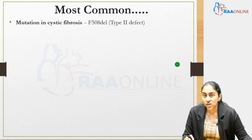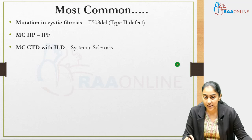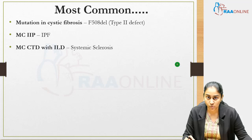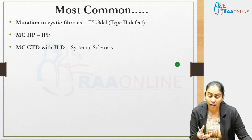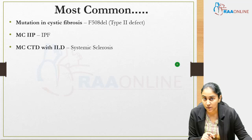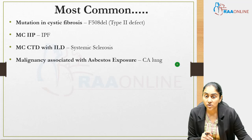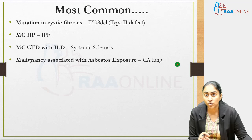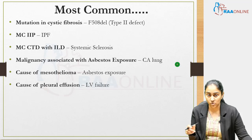The most common mutation in cystic fibrosis is the F508-del type 2 defect. The most common idiopathic interstitial pneumonia is IPF, more common in males, with clubbing, lower lobe predominance, UIP pattern on pathology, and honeycombing on CT. The most common connective tissue disorder associated with ILD is systemic sclerosis. The most common malignancy associated with asbestos exposure is carcinoma lung — not mesothelioma — but the most common cause of mesothelioma is asbestos exposure.